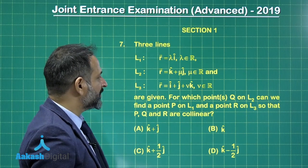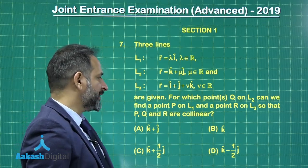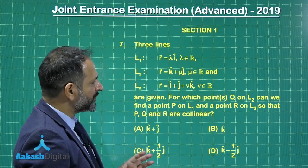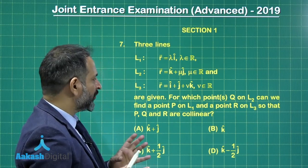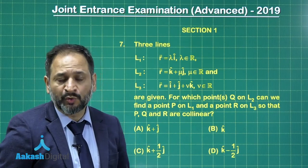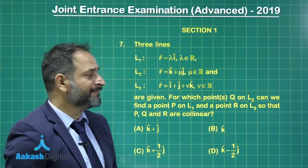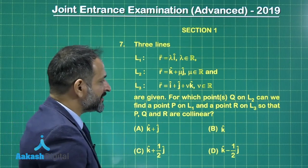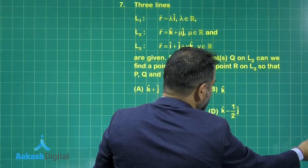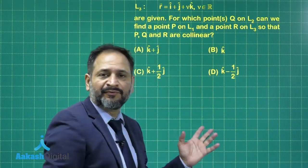It is given that point Q is on L2, point P is on L1, and point R is on L3. We have to find out for which points Q on L2 these three points are collinear. These three points are lying on different lines. Let us understand the complete problem with the figure.